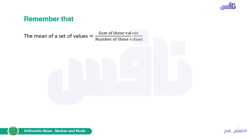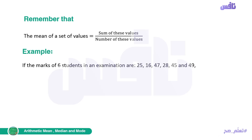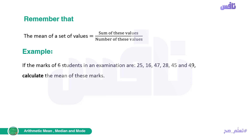We studied the mean in first prep and we know that to find the mean for a set of values, we use the rule: the sum of these values over the number of these values. Let's take an example to remember what we were doing. If the marks of six students in an examination are 25, 16, 47, 28, 45, and 49, calculate the mean of these marks.